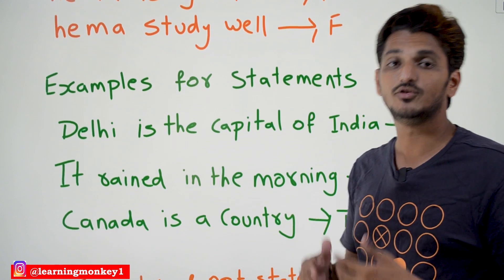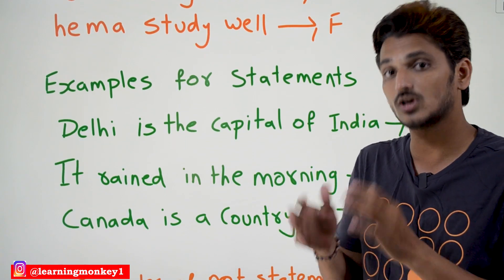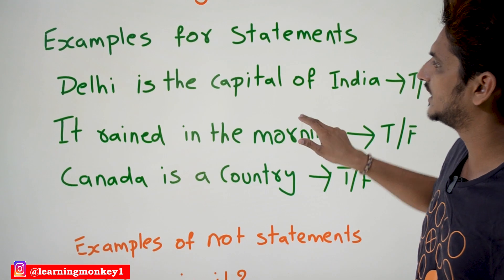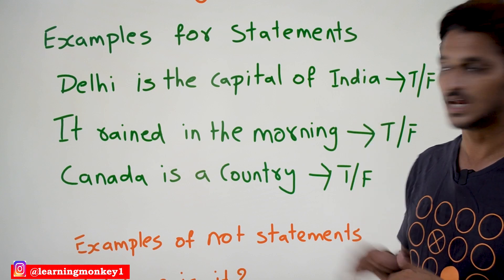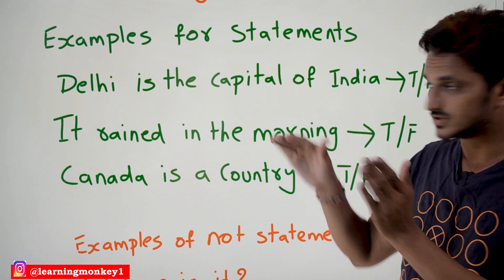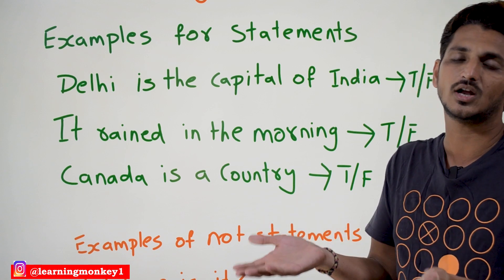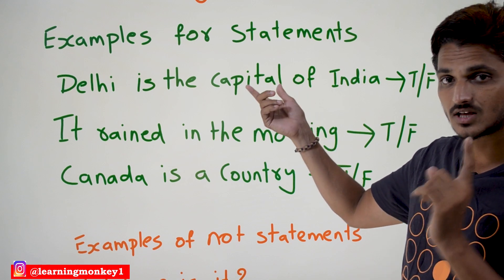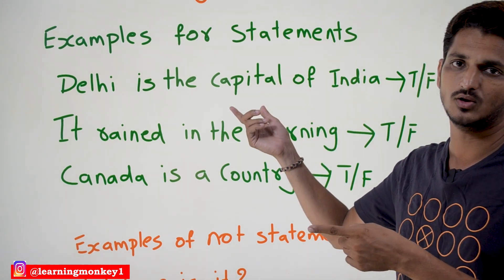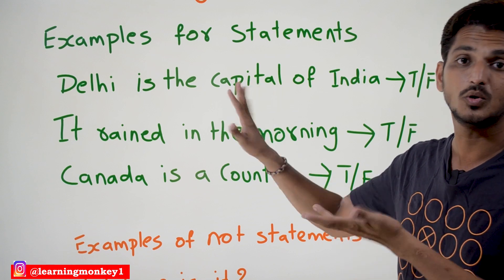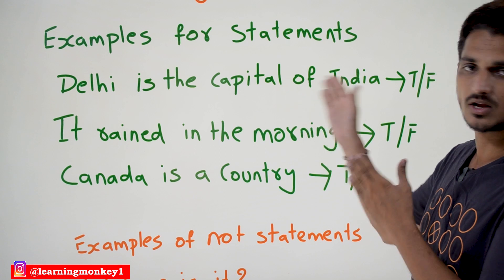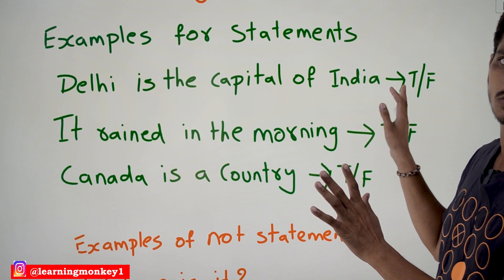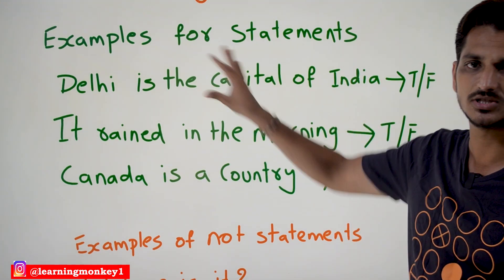Now let's try to understand a few examples of statements, and examples which are not statements. First, examples for statements: 'Delhi is the capital of India.' Can you divide this sentence into two separate simpler sentences? No, we cannot. So that's why it is a statement, and you can assign either a true value or a false value — any one truth value can be assigned, not both. Delhi is the capital of India — yes, it is true. We can assign any one of them, not both. Then we call it a statement.